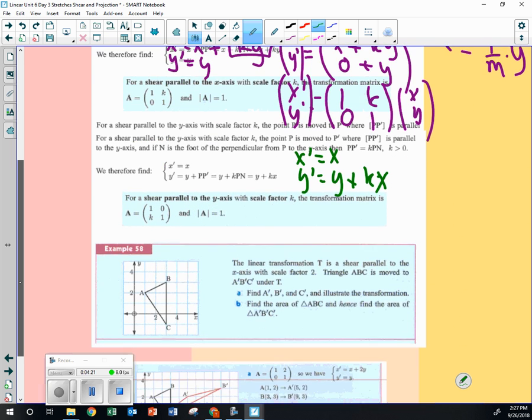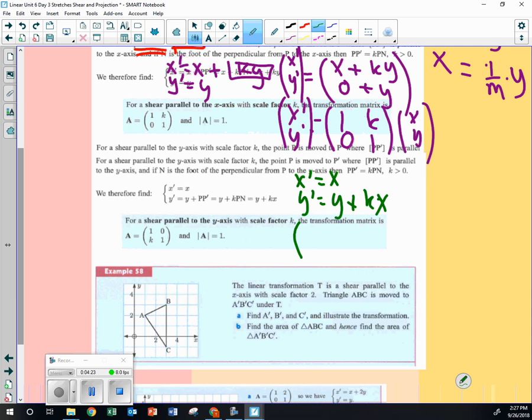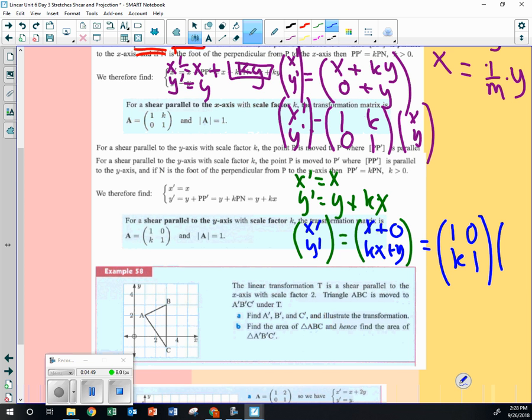So, rewriting this in standard matrix form, we can have x prime, y prime, I like that green. And then we'll get the x is 1, well, let's just do x plus 0, k x plus y, which is 1, 0, k 1, times x, y. And there's your shear for parallel to the y.